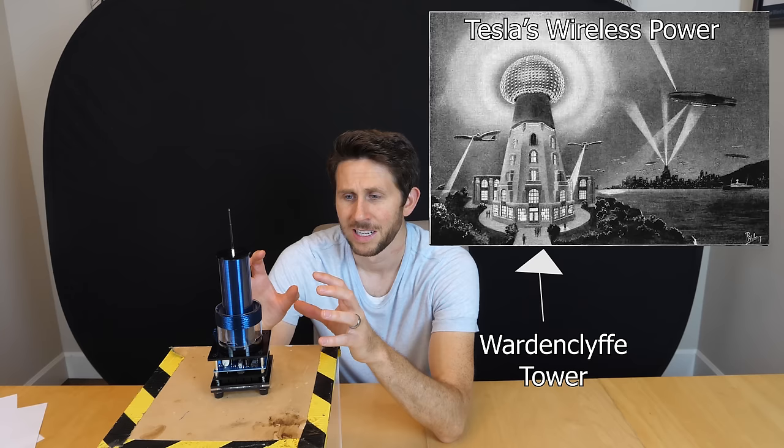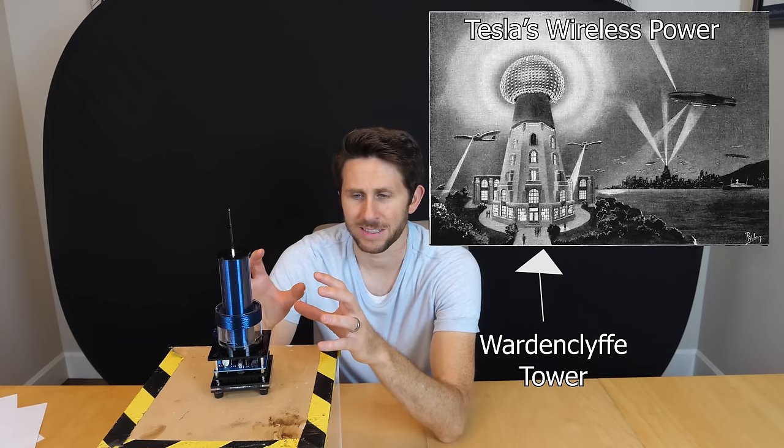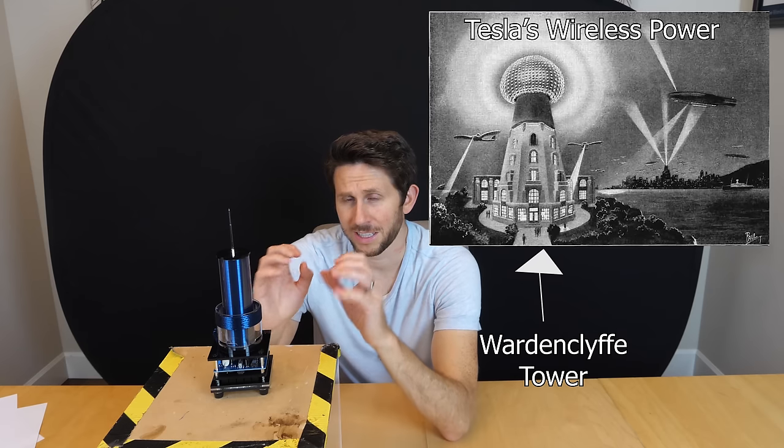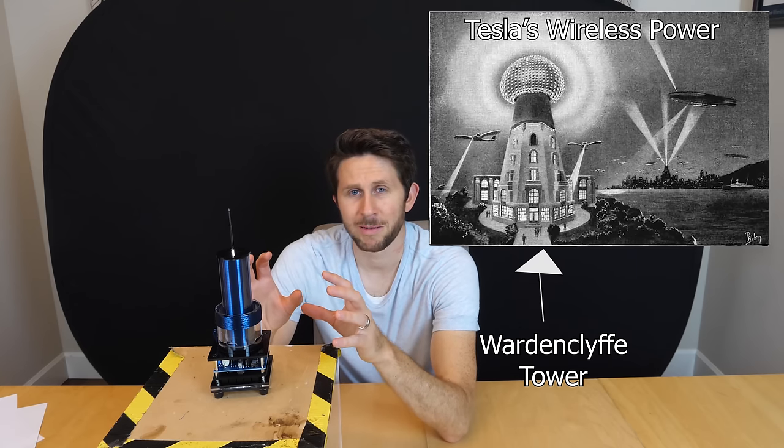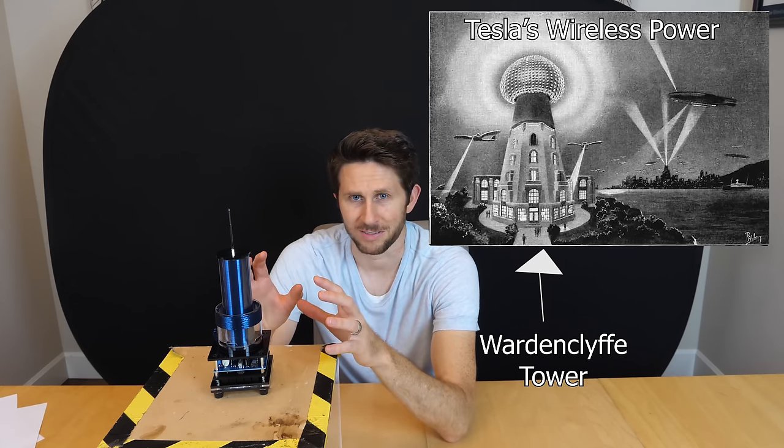Now, if Nikola Tesla was such a smart guy, why is it that he went on to try to build this Wardenclyffe tower when he knew about that power decrease with distance? Well, there's a few reasons why. Now, let me explain what he was trying to do with his Wardenclyffe tower.